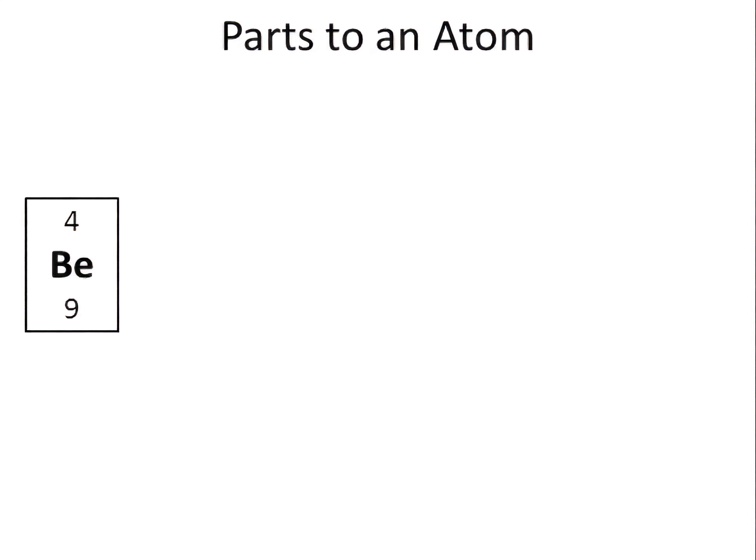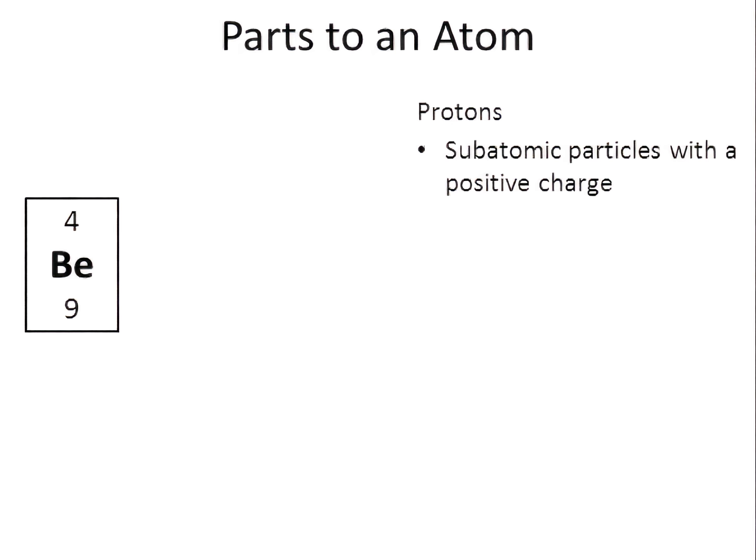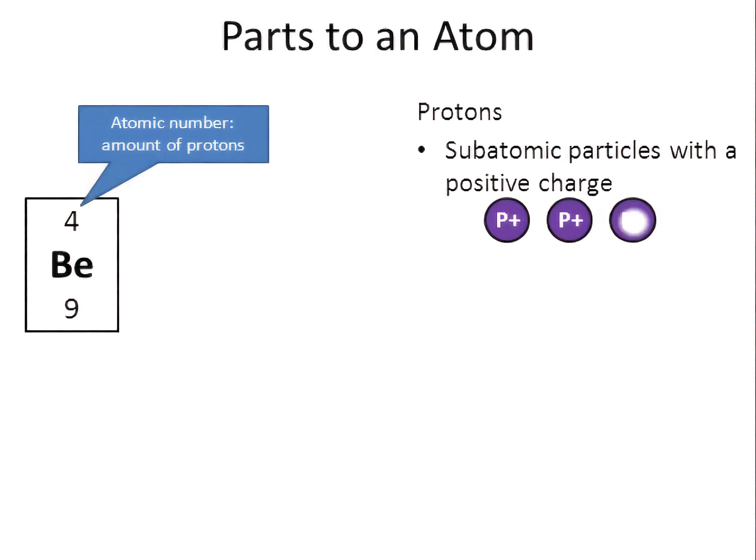Let's first look at the basic parts to an atom. Here's a square from the periodic table. BE is the element beryllium, and elements are made from atoms. Atoms have three basic parts. First of all, there are the protons — these are the parts that have a positive charge. From the periodic table square, I know from the atomic number that beryllium has four protons.